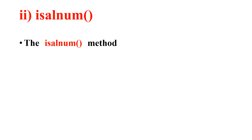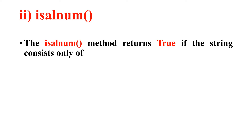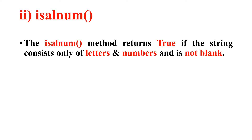Moving on, let me consider the second string method, isalnum. The isalnum method returns true if the string consists only of letters and numbers and is not blank. So as per the definition, it should contain either letters or numbers, or both letters and numbers, but it should not be blank.